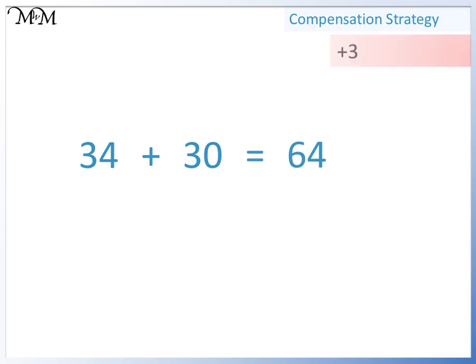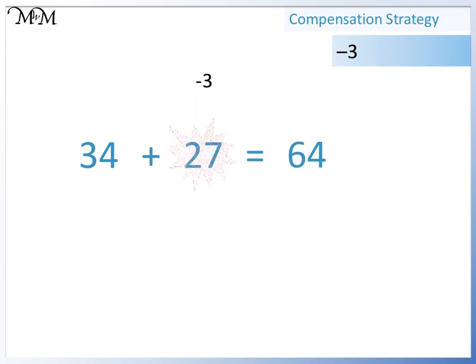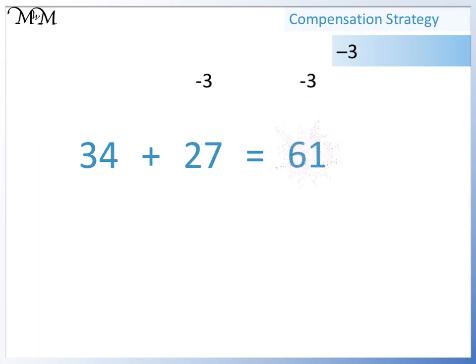Because we added 3, we now need to subtract 3. Our original calculation was 34 plus 27, so we must subtract 3 from our answer. Therefore, 34 plus 27 equals 61.